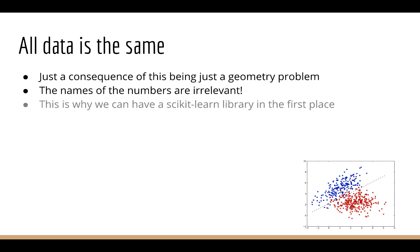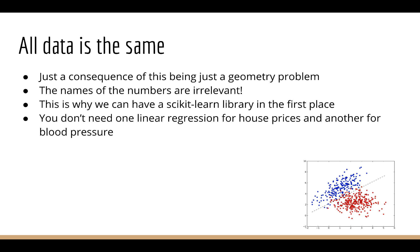This is why we're able to have the scikit-learn library in the first place. There's only one class for linear regression. We don't need one linear regression class for calculating house prices, and another one for calculating blood pressure. It's just linear regression, we use it on numbers.